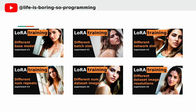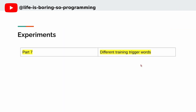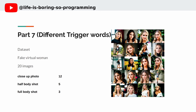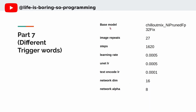These are the previous six experiments. If you have not watched them yet, you can find the links here or in the description below. Today we are going to talk about part 7. We will try different trigger words, if there are any, and what should be the trigger words. I will use the same set of images for training, but the parameters are different. I will use the chill out mix as the base model, and I will specify the number of training steps instead of specifying the number of training epochs.